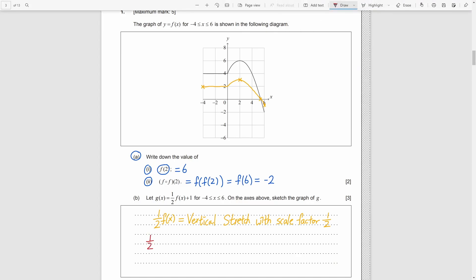After the first change, we need to add 1 to the function. That means move the line up by 1 unit and we get the final answer.